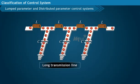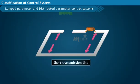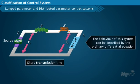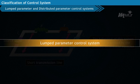But in case of short transmission line, the same parameters are represented in the lumped form, so that the behavior of this system can be described by the ordinary differential equation. These kinds of systems are called lumped parameter control systems.